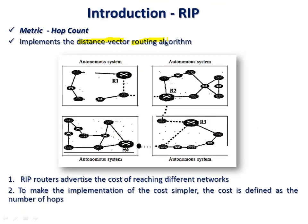The distance vector algorithm, covered in the previous lecture series, is used to find the shortest path using the Bellman-Ford equation. Autonomous systems — for example, an institute with several branches, each having different local area networks — represent separate autonomous systems. RIP is used for communication inside an organization in an intra-domain setup, and the metric used is hop count.